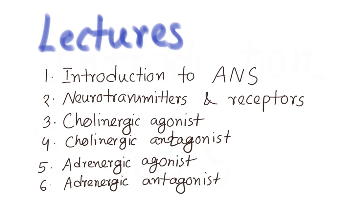We have divided our course into six main lectures. In the first lecture we will introduce you to the autonomic nervous system. In the second lecture we will talk about neurotransmitters and receptors. In the next four lectures we will cover the major divisions of ANS pharmacology: cholinergic agonist, cholinergic antagonist, adrenergic agonist, and adrenergic antagonist. We might take a few more lectures to cover some miscellaneous topics.